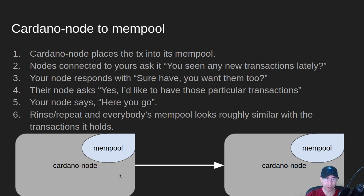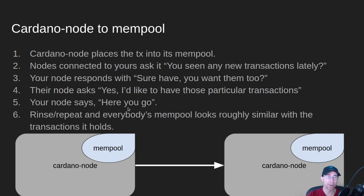Other nodes connected to your node will ask it, "Hey, have you seen any new transactions lately?" Your node says, "Sure have. Do you want them?" And their node says, "Yes, I'd like those particular transactions I don't have in my mempool." And then your node says, "Here you go." Your transaction then gets passed around to all the other nodes on the network, and eventually everybody's mempool looks roughly the same. Transactions are flying all the time so they won't be identical, but they'll be pretty close.